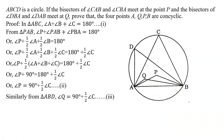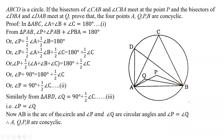Similarly, from triangle ABD, we can prove that angle Q equals 90 degrees plus half of angle C — equation 3. Therefore, angle P equals angle Q, from equations 2 and 3. Now, AB is the arc of the circle, and P and Q are angles at the circumference. Since angle P equals angle Q, and we know that if angles at the circumference are equal then the points are concyclic, therefore A, Q, P, B are concyclic, and that is our proof.